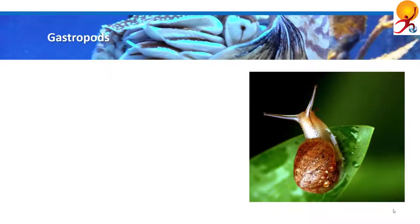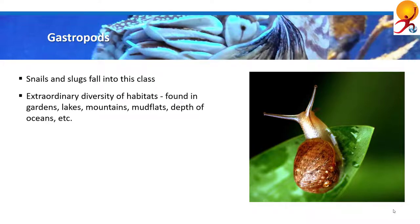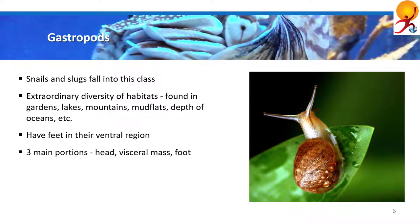Next is Gastropods. All kinds of snails and slugs — big or small, marine, freshwater, or land snails — are put in this class. This class of molluscs has an extraordinary diversity of habitats; they are found in gardens, woodlands, deserts, mountains, lakes, small ponds, estuaries, mud flats, beaches, and even in abyssal depths of the oceans. They are called gastropods because they have their feet in their ventral region. A body of gastropods is divided into three main portions: the head, the visceral mass, and the foot.